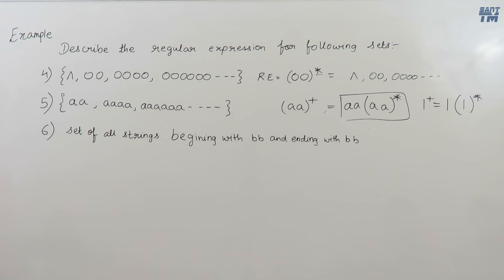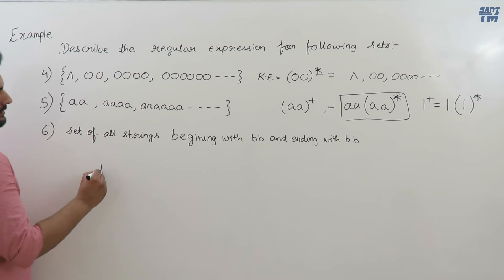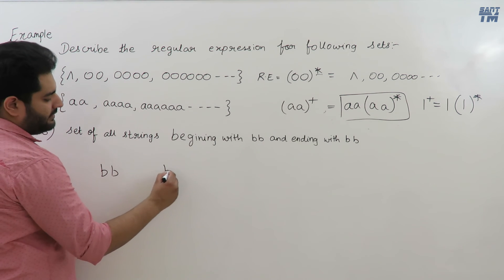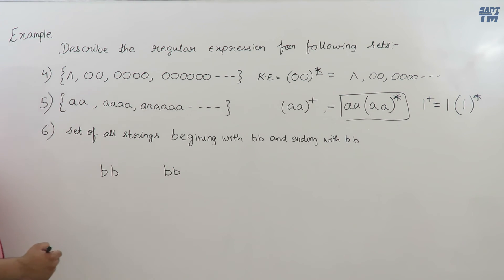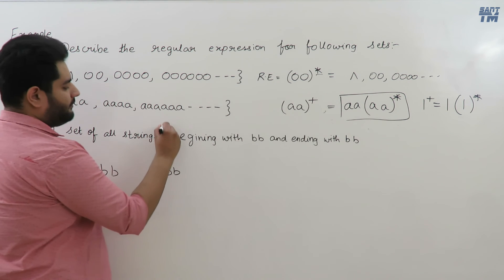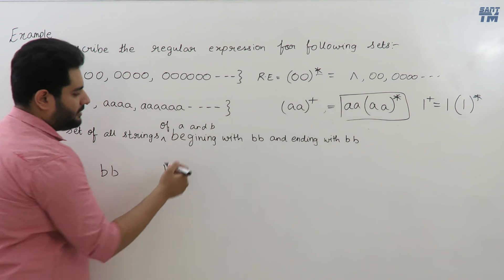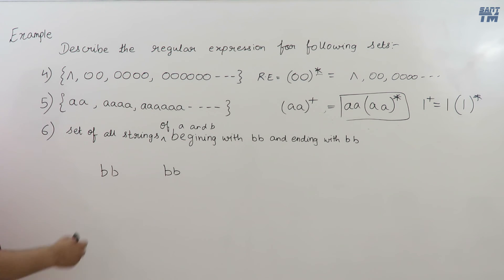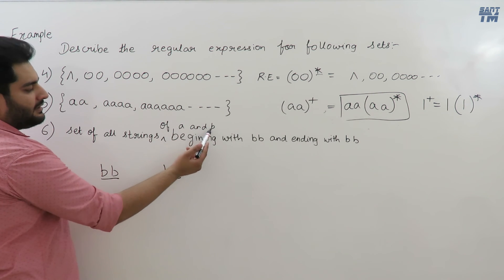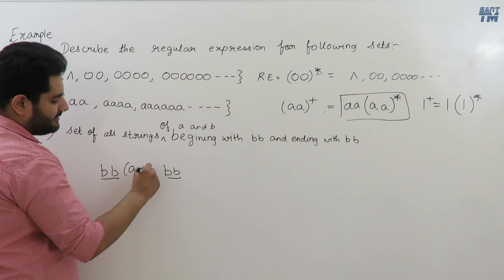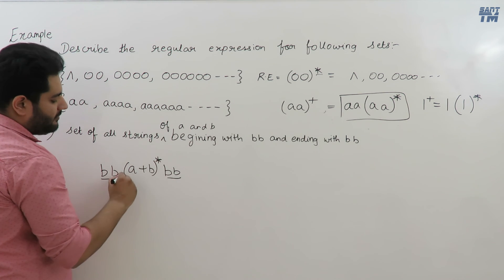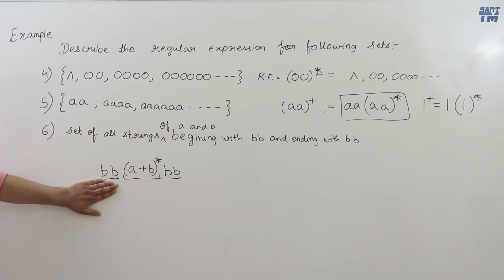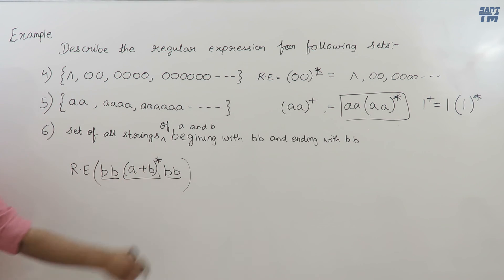Example: set of all strings of a and b beginning with bb and ending with bb. We fix bb at the start and bb at the end. In between, any combination of a or b can appear, written as (a+b)*. The required regular expression is bb(a+b)*bb.